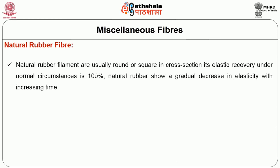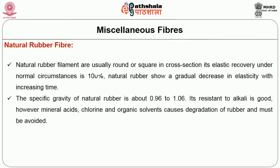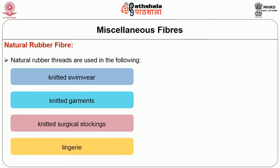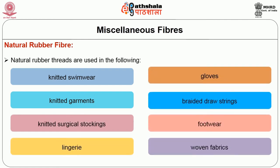Natural rubber filaments are usually round or square in cross section. Its elastic recovery under normal circumstances is 100%. Natural rubber shows a gradual decrease in elasticity with increasing time. The specific gravity of natural rubber is about 0.96 to 1.06. Its resistance to alkali is good; however, mineral acids, chlorine and organic solvents cause degradation of rubber and must be avoided. Natural rubber threads are used in knitted swimwear, knitted garments, knitted surgical stockings, lingeries, gloves, braided drawstrings, footwear, and woven fabrics. Fabrics designed with rubber yarns tend to improve the overall garment fit.